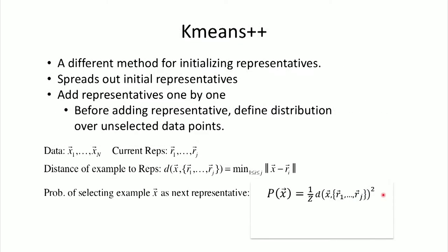So that brings us to k-means++, which is a different and better method to initialize k-means. It spreads out the initial representatives. And the way that it works is you add representatives one by one. And before adding each representative, you define a distribution over the unselected data points.